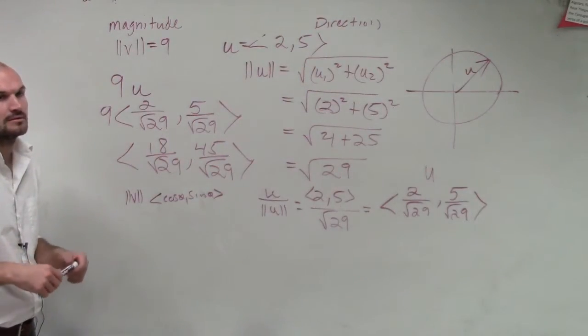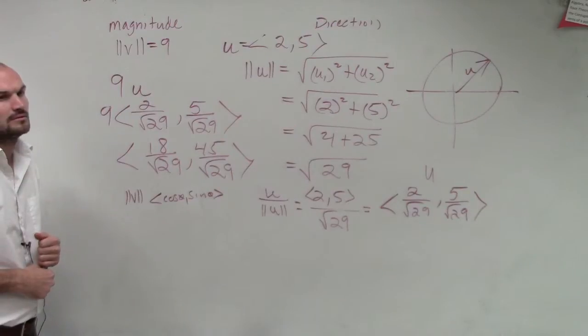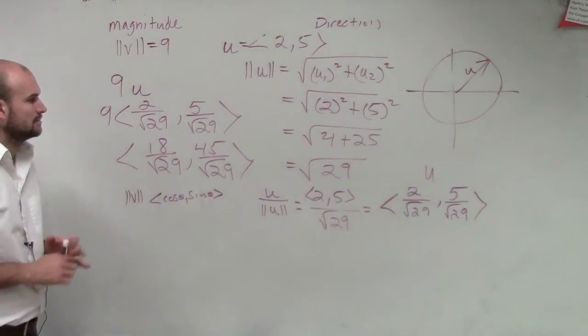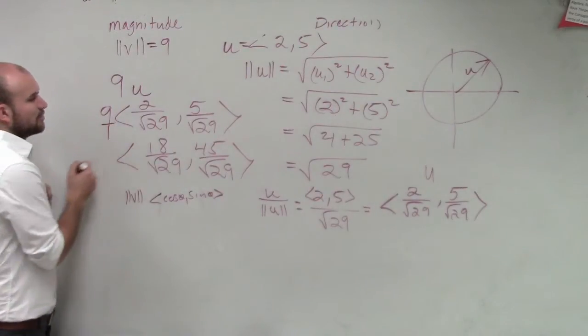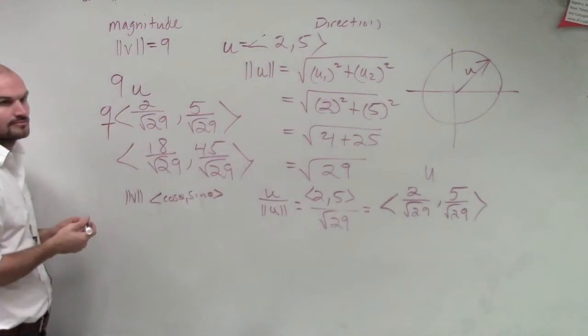Why doesn't the 9 multiply by the radical for the unit? 9 over 1. Yeah, it's going to be in the numerator. So you multiply across.